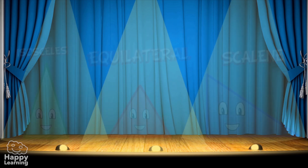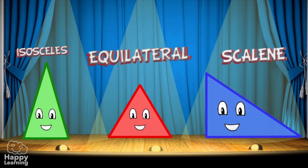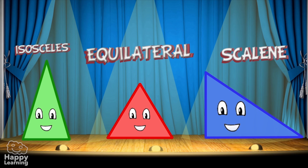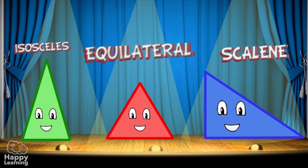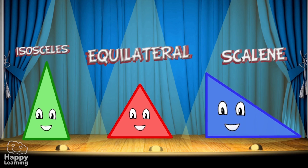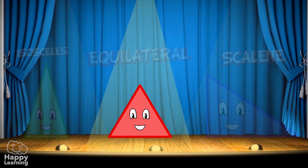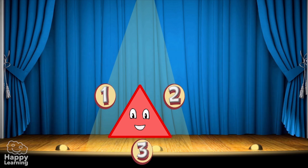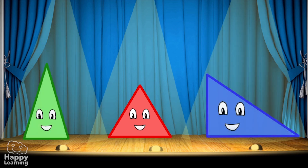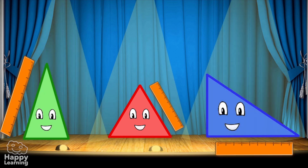Maybe if they didn't have such strange names it'd be easier to remember them. So let's look again just so we don't forget. All triangles have three sides and depending on the length of their sides they can be classified like this.